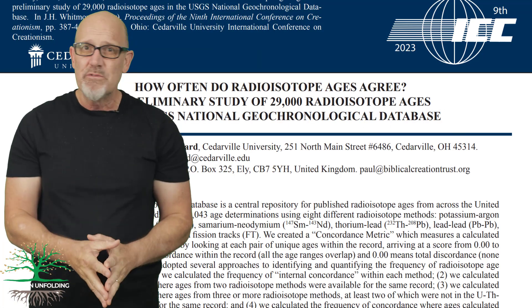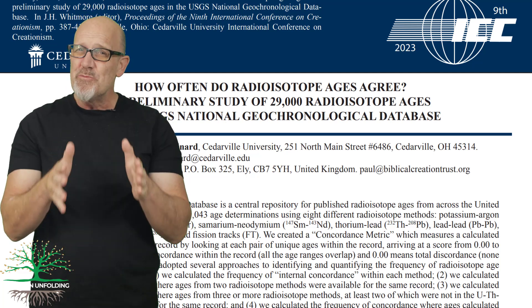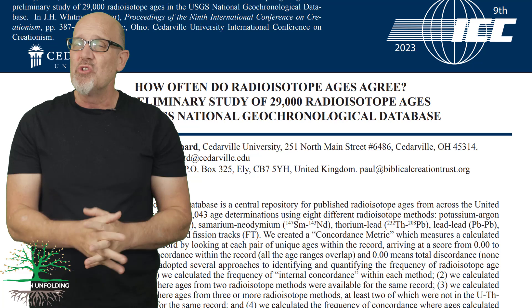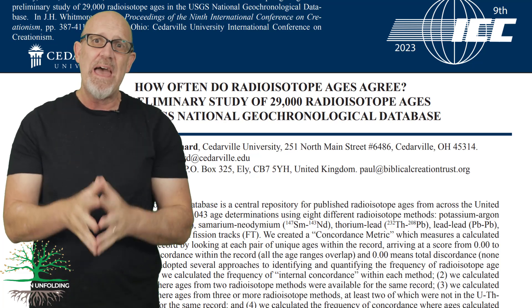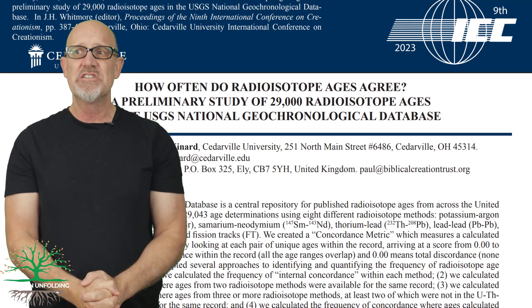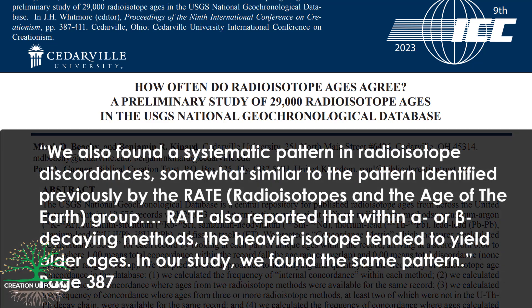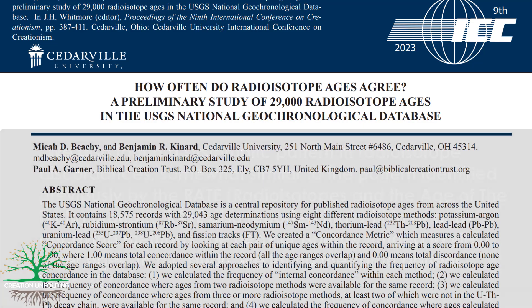In this latest paper from 2023, and with the RATE Group's research in mind, similar results were also obtained. They summed up their observations: they found a systematic pattern in radioisotope discordances somewhat similar to the pattern identified previously by the RATE group. RATE reported that within alpha or beta decaying methods, the heavier isotope tended to yield older ages — and the 2023 study found the same pattern.